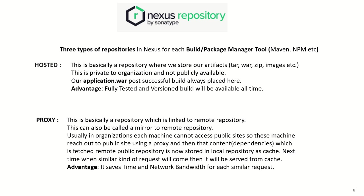Now let's discuss the Nexus repository from Sonatype in detail. There are three types of repositories: hosted, proxy, and group. First is the hosted repository, where we store our artifacts like TARs, WARs, ZIPs, and images. This is private to the organization and not publicly available. Companies make them only accessible internally so only organization members can download artifacts. Our application.war post successful build will always be placed here. The advantage is that a fully tested and versioned build is always available.